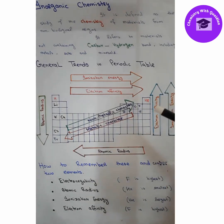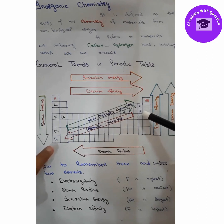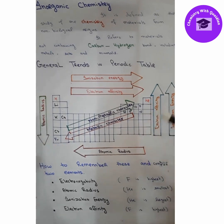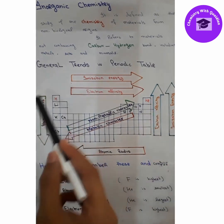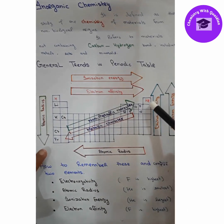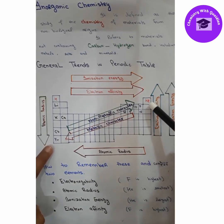For example, if we compare chlorine with francium: chlorine will have a small atomic radius, while francium will have the highest atomic radius among all the elements, because it lies totally opposite to helium in the periodic table.